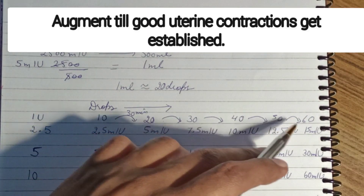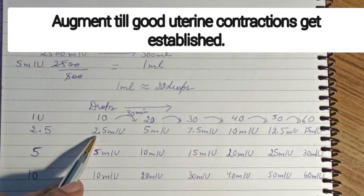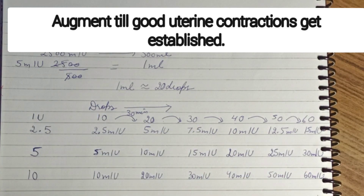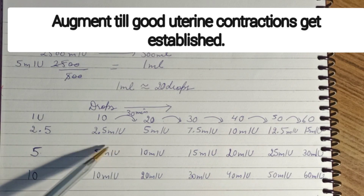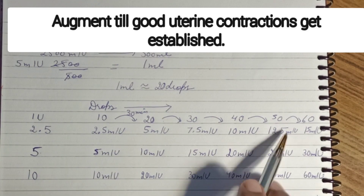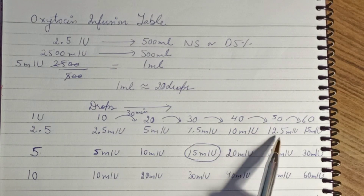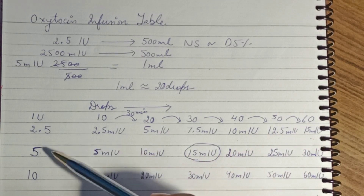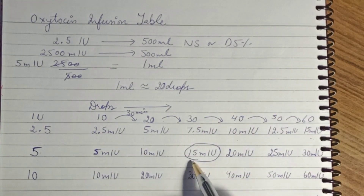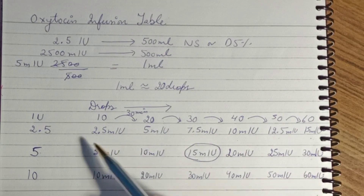After 30 minutes, you augment from 10 to 20 to 30 to 40 to 50 to 60 drops, increasing every 30 minutes. After about two and a half hours, this first bottle will be over. You then move to 5 international units in 500 ml NS or D5, but you start at 30 drops directly — since the maximum reached with the 2.5 IU bottle was 15 milli-international units and you don't want to decrease the dose. At 30 drops with 5 IU, that gives 50 milli-international units, then you increase to 40, 50, and 60 drops.